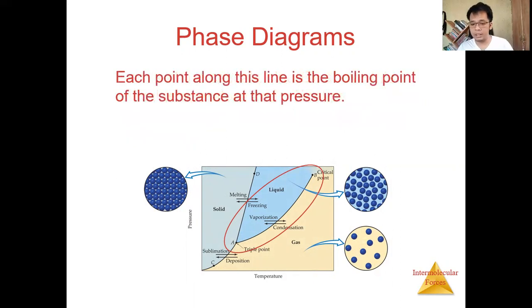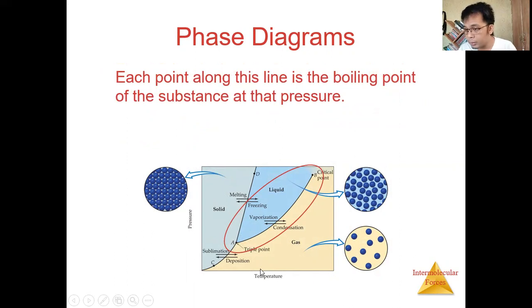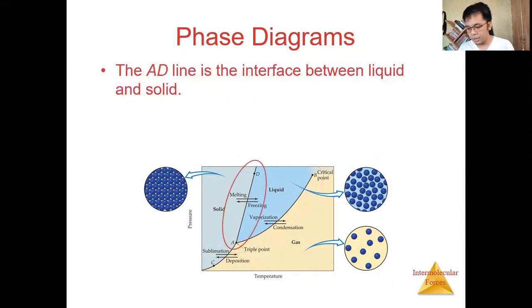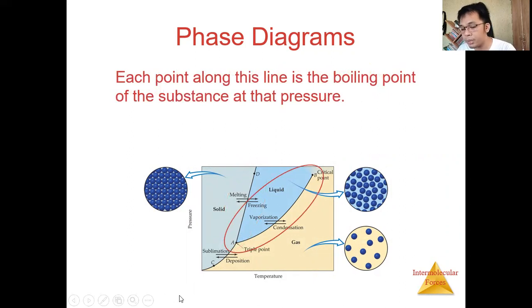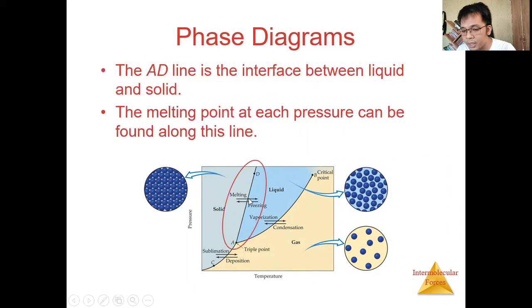Each point along the liquid-vapor boundary line is a boiling point, depending on the pressure. The temperature at which the substance reaches one atmospheric pressure along that line is the boiling point. The line from A to D is the interface between liquid and solid, representing a state of dynamic equilibrium where melting and freezing occur at the same rate at a specified pressure and temperature.